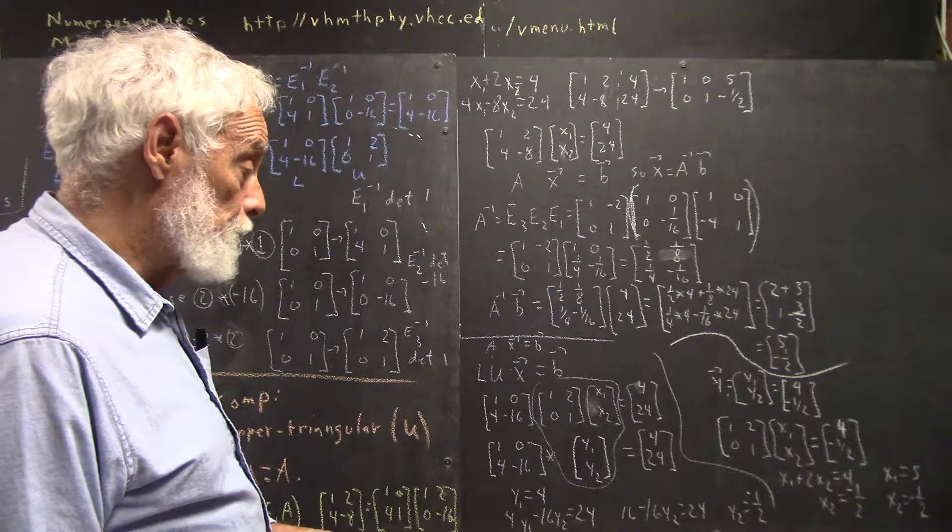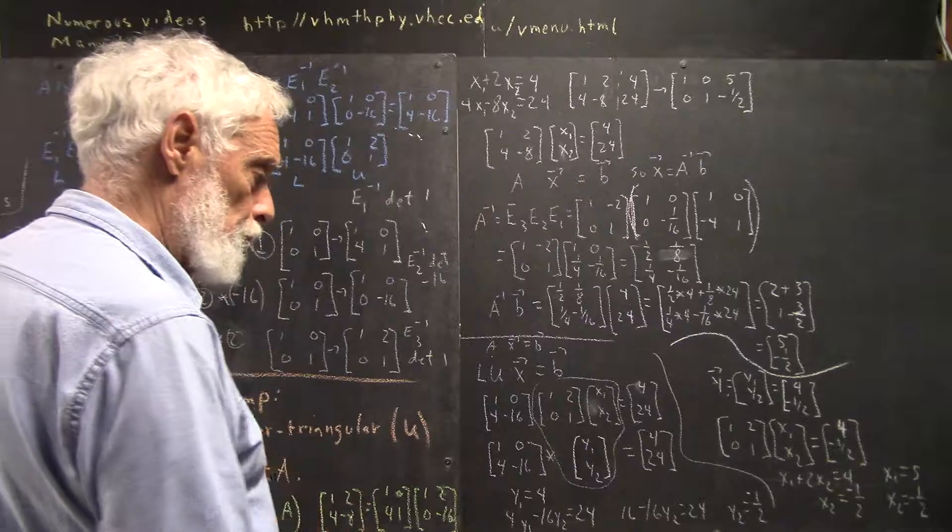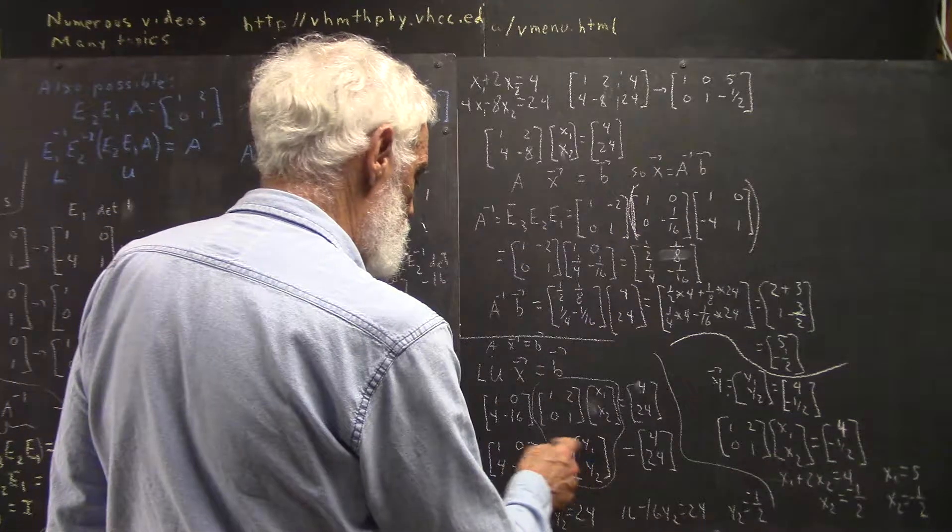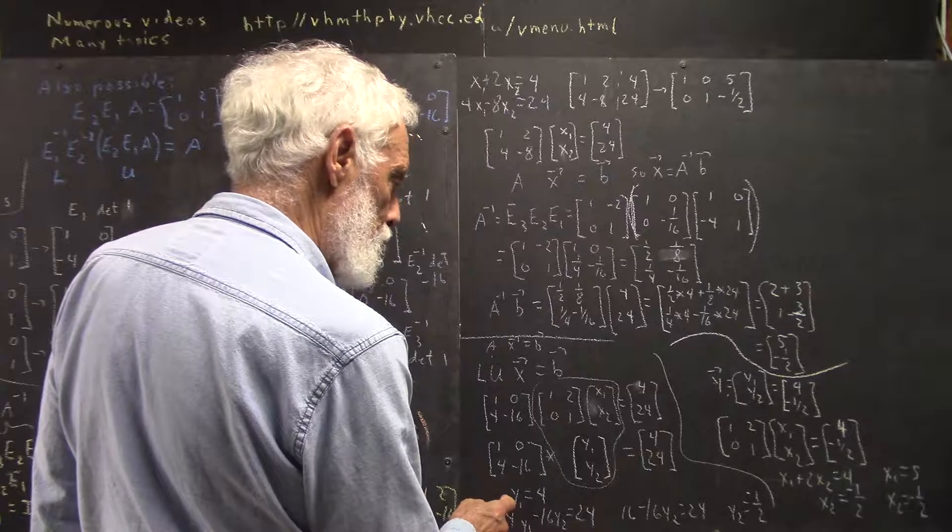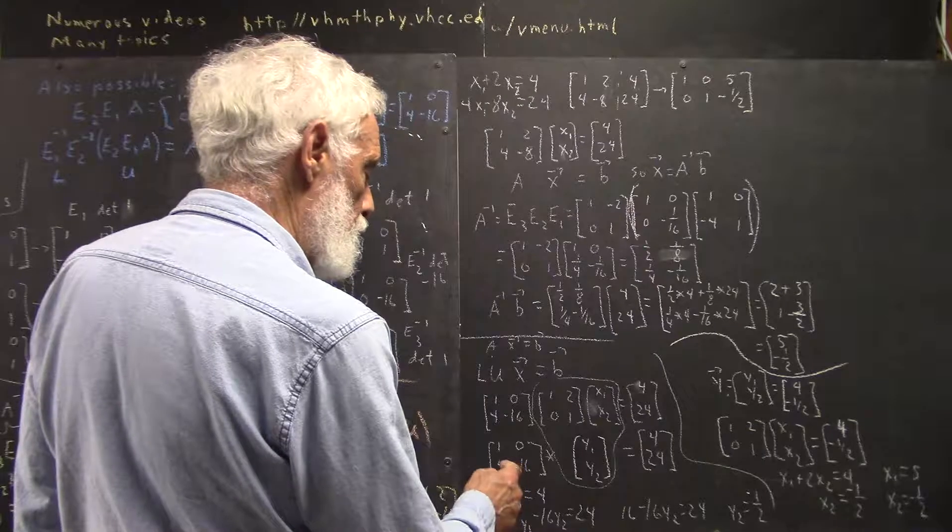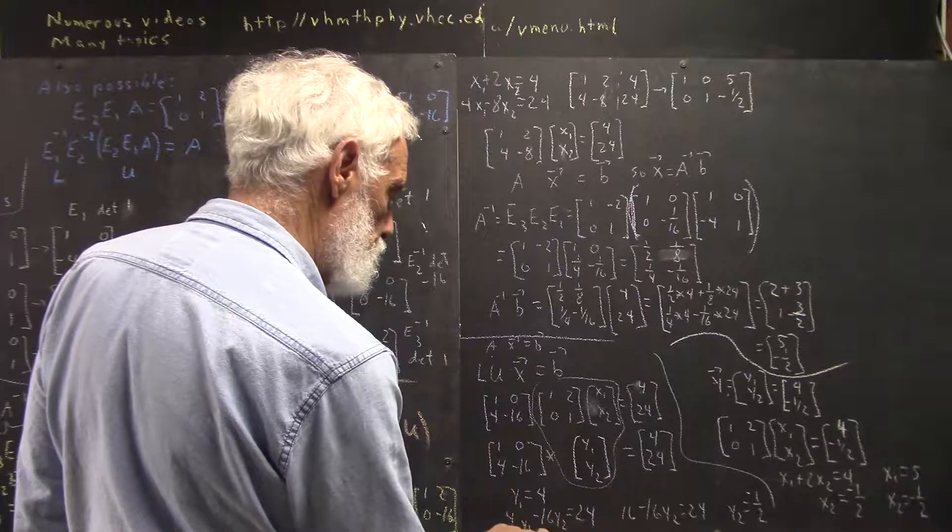Now, we could solve this by matrix reduction and so forth, but it's easy to solve this by forward substitution because we have a 1, 0 here. It's a lower triangular matrix. We're going to have a 0 here. So, 1, 0 times this is just going to give us Y1, and that's going to equal 4. So, Y1 has to equal 4.